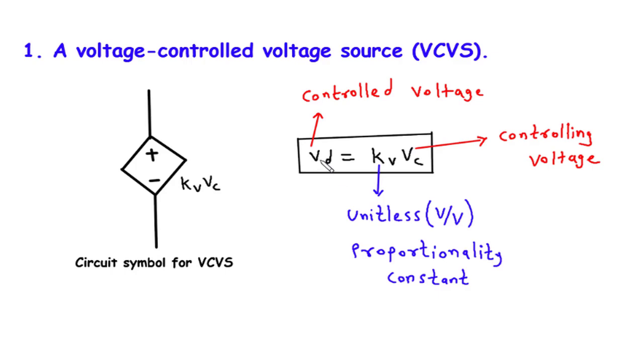The relationship between the controlled voltage, VD, and the controlling voltage, VC, can be expressed mathematically as VD equals KV times VC.